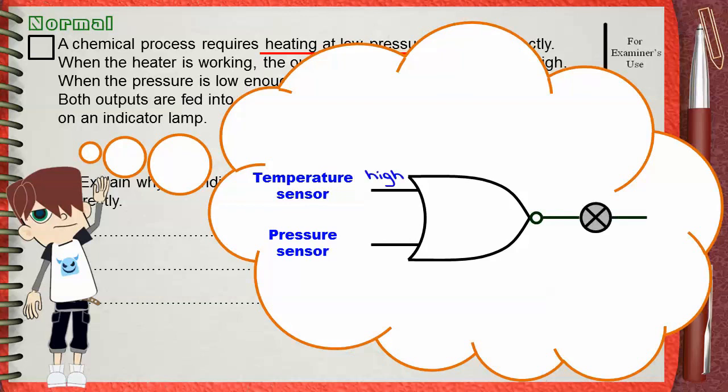The question says that this process requires heating. This means the temperature sensor is high. It also requires low pressure. This means the pressure sensor will be low. If high and low signals are fed to a NOR gate, its output will be low. So the indicator lamp will be off.